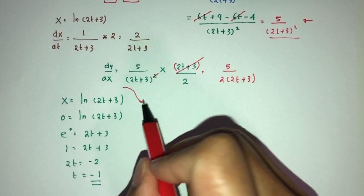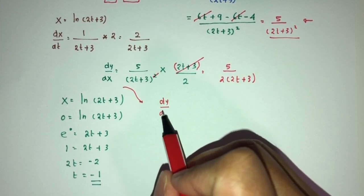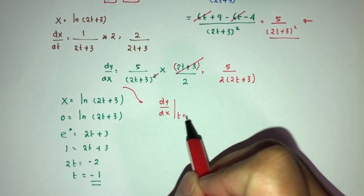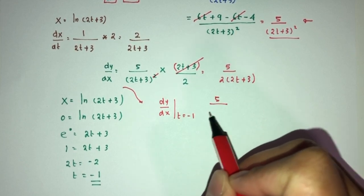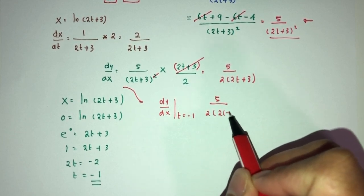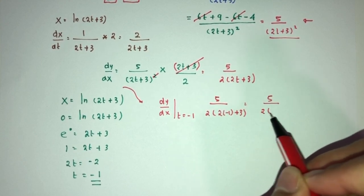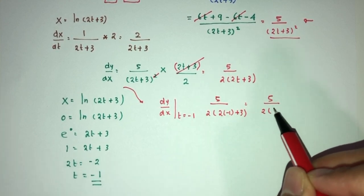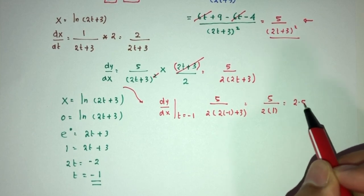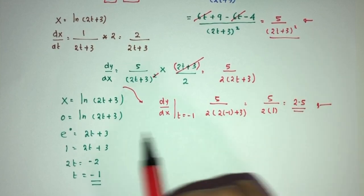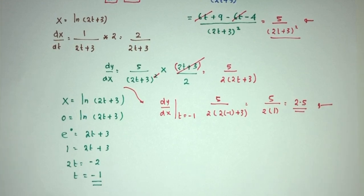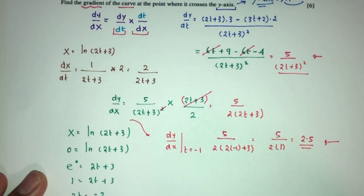Now, find the value of dy/dx. So, dy/dx at the value of t equal to -1. That should be 5/2 times 2(-1) + 3. That will be 5/2 times 1, which equals 2.5. Or 5/2 as well is your answer for dy/dx. And that is your question number 3.